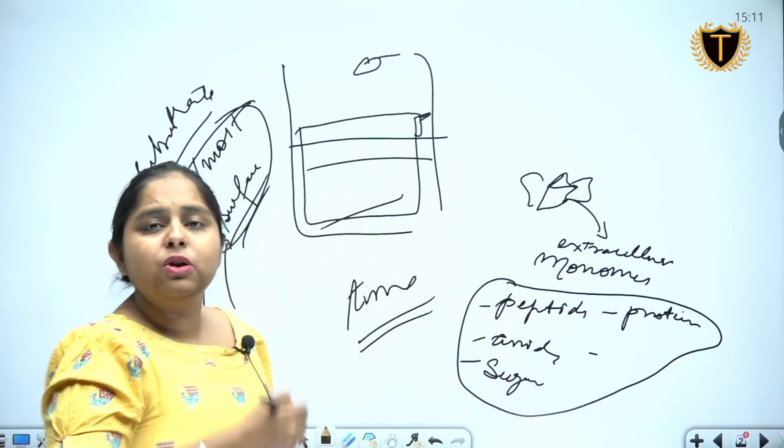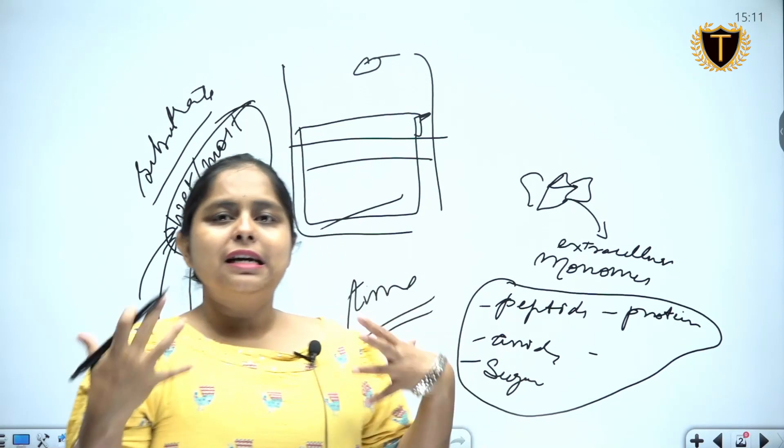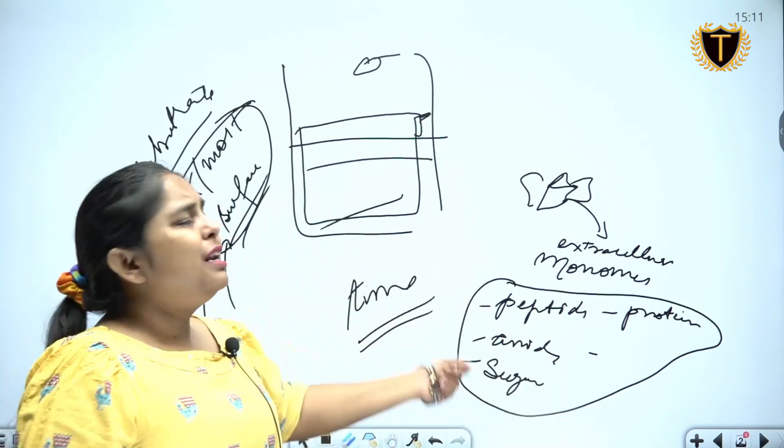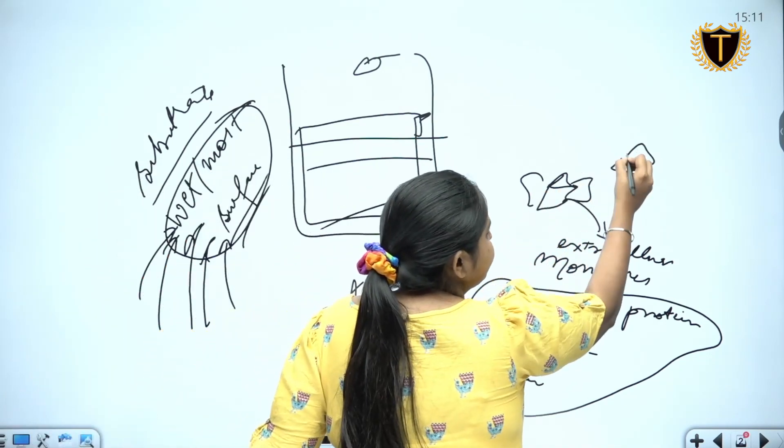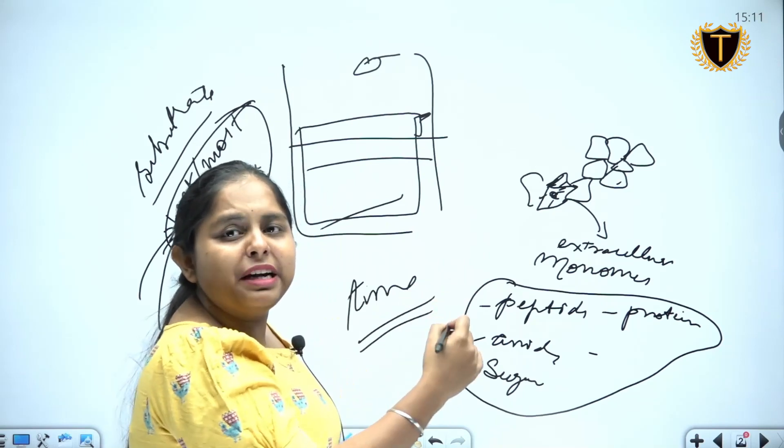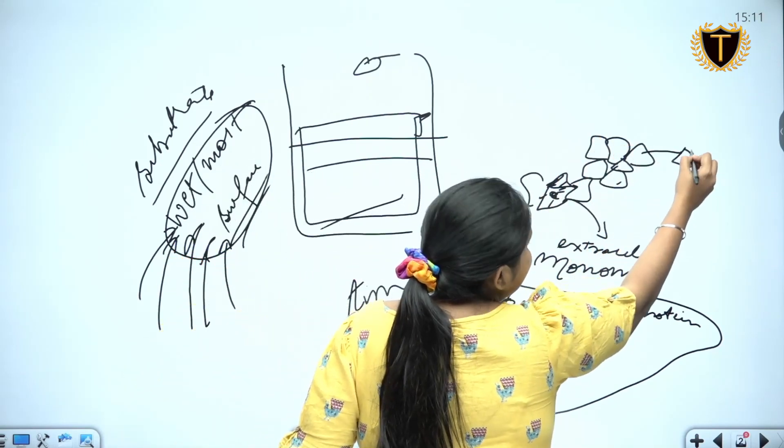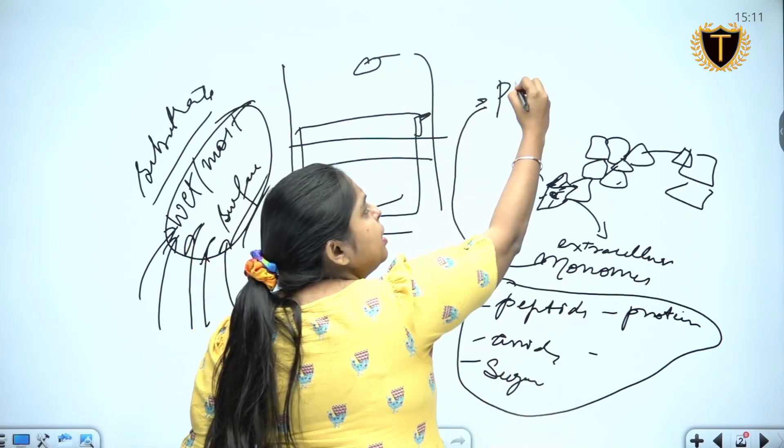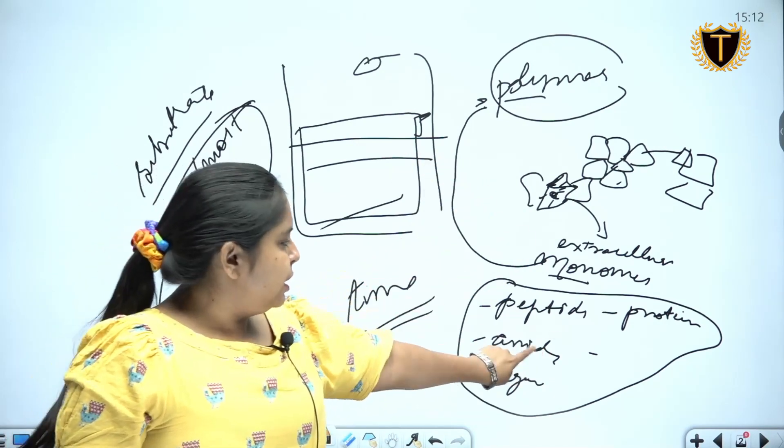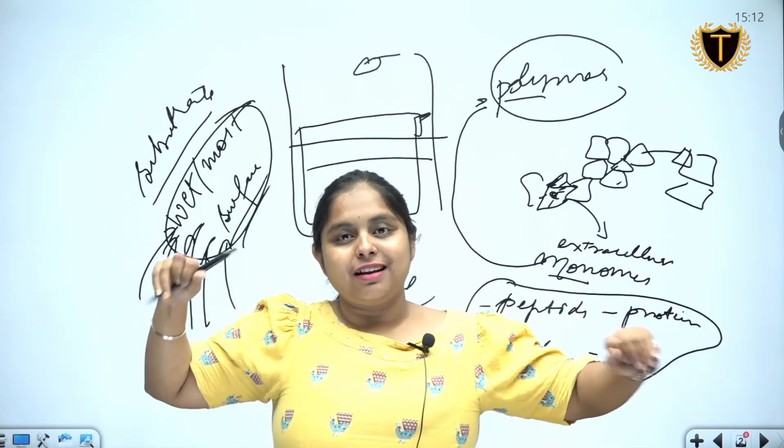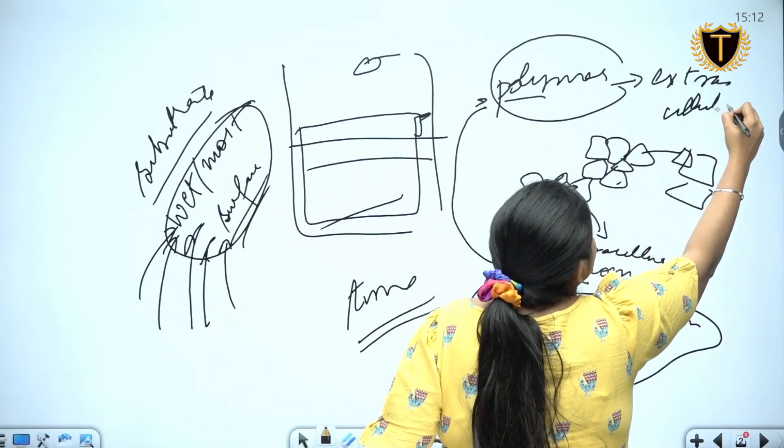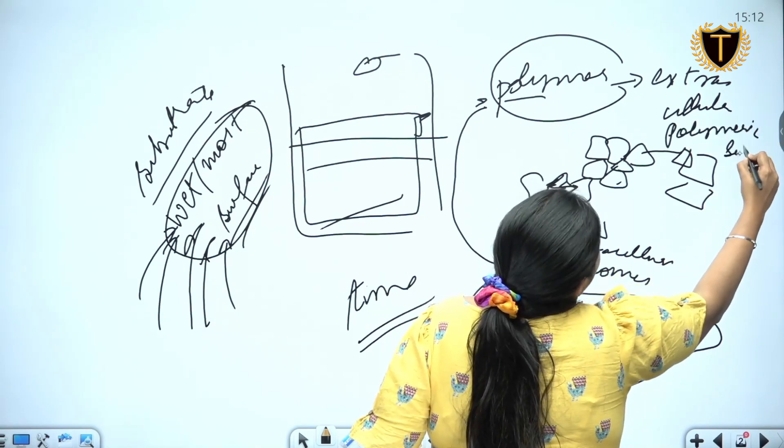So the extracellular surface of the microorganism is secreting some form of monomer which could be sugars (that is carbohydrates), which could be proteins, or which could be amides, which could be lipid molecules. So these monomers released from the extracellular surface, they are the ones which are forming the connecting media and they will soon form chain reactions. And this monomer gets converted into a polymer.